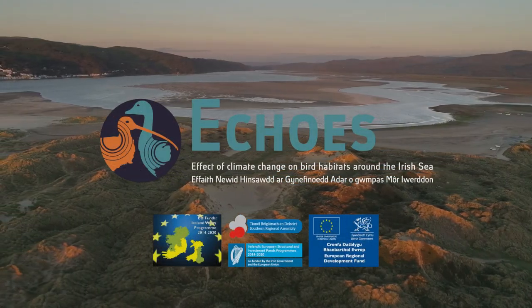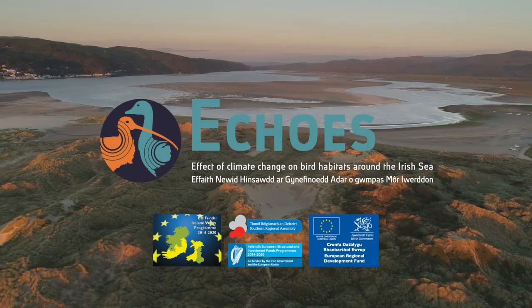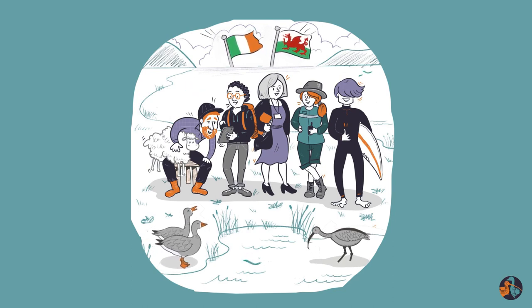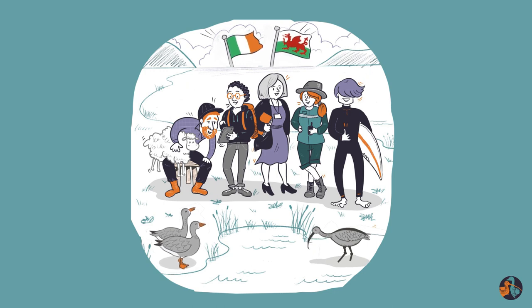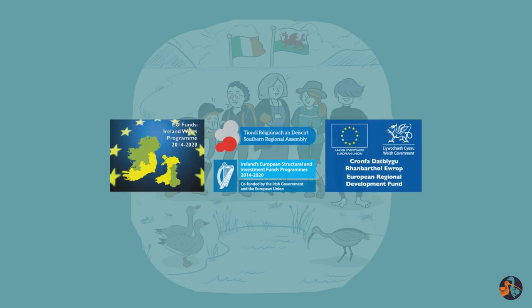This video is an introduction to the ECHOES platform and its primary areas of functionality. The ECHOES platform was developed as part of the ECHOES project, a three and a half year research project looking at the effects of climate change on the habitats of two wetland bird species, the curlew and Greenland white-fronted goose, or GWFG. ECHOES is funded by the European Regional Development Fund through the Ireland-Wales Cooperation Programme.